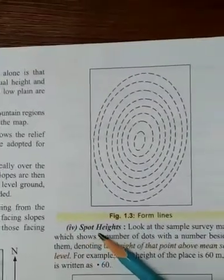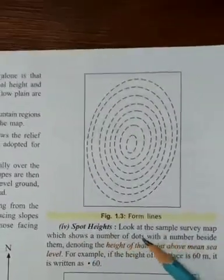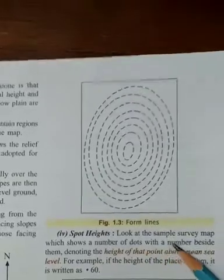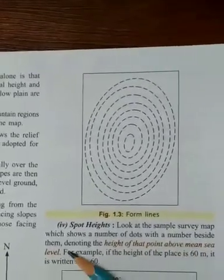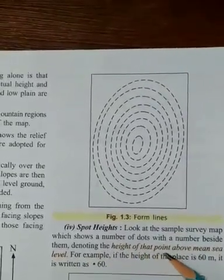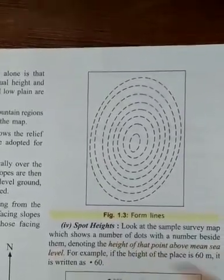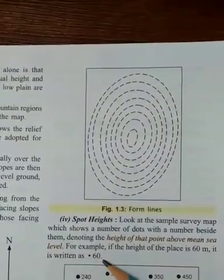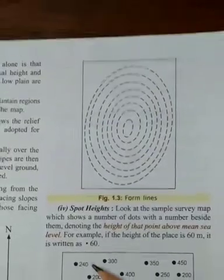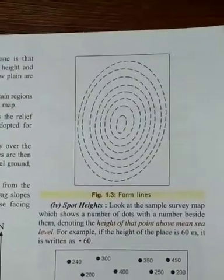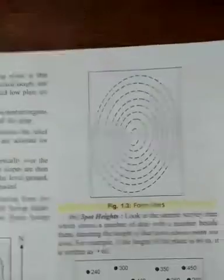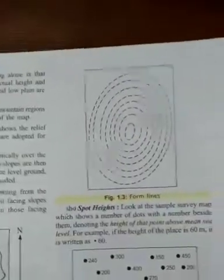The fourth point is spot height. Look at the sample survey map which shows a number of dots with numbers beside them, denoting the height of that point above mean sea level. For example, the height of a place is 60 meters, written as 60. That is called a spot height. We are continuing this lesson in the next video. Thank you.